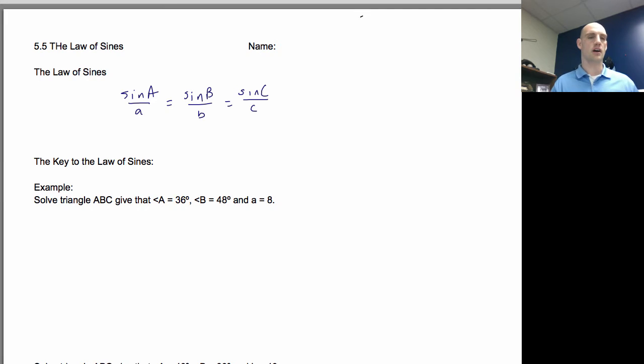A couple of keys to the law of sines. We're looking for, we need a full ratio. We need a full ratio, meaning we need an angle and its opposite side. So we need one that's full.